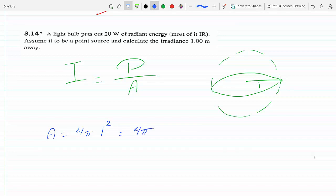So intensity is just the power, which is 20 watts—that's the power, that's energy per unit time—divided by 4π meter squared. So we get 5 over π watts per meter squared.